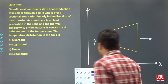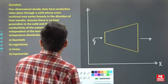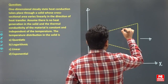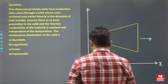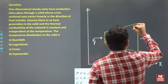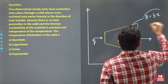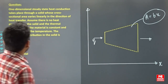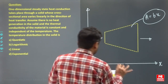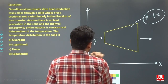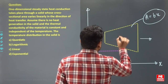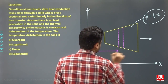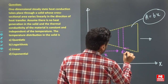The area varies linearly in the x direction, the direction of heat transfer. Let's say the cross-sectional area A equals bx, where b is a constant and x is the position. We need to find the temperature distribution in the solid. The general method is to take an element of thickness dx at a location x.